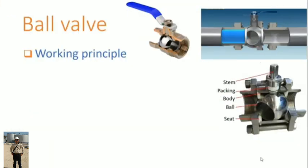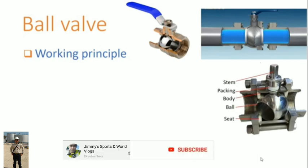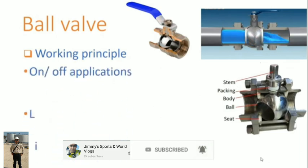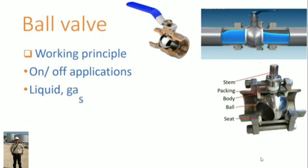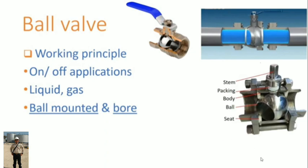Working principle of ball valve is very similar to plug valve. The seat matching the ball is circular, so seating stress is circumferentially uniform. The seats are usually made by polytetrafluoroethylene, which is inert to all chemicals and has low coefficient of friction. The valve uses only for on-off applications dealing with both liquid and gases. Ball valve can be divided into several types according to the way of ball mounted and bore type.